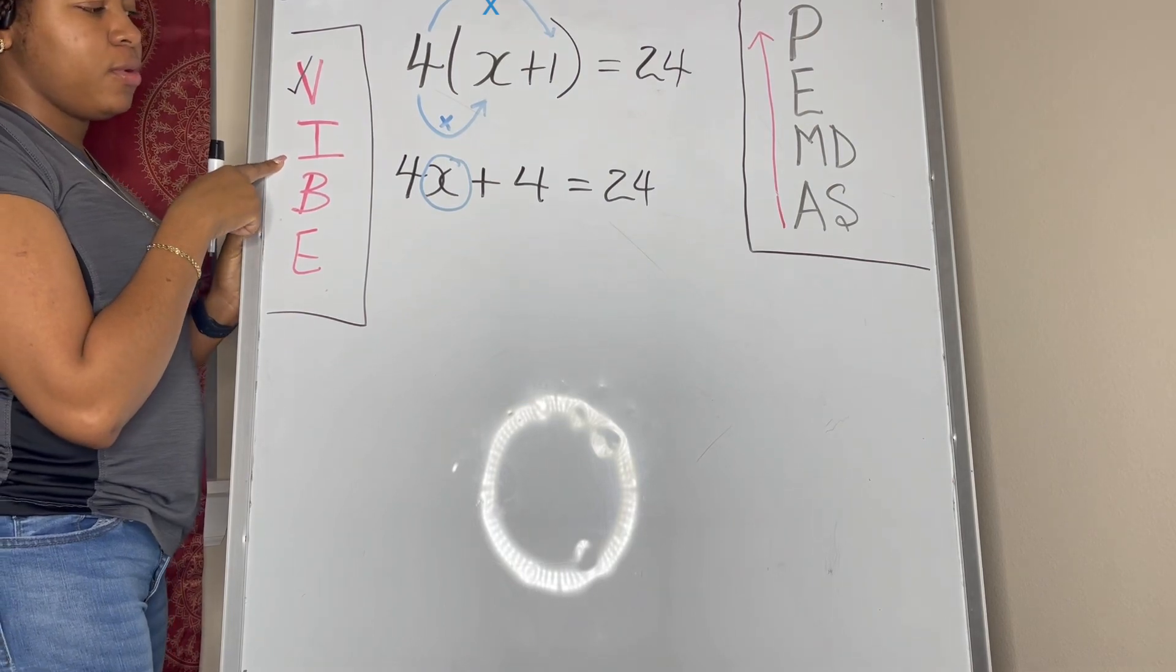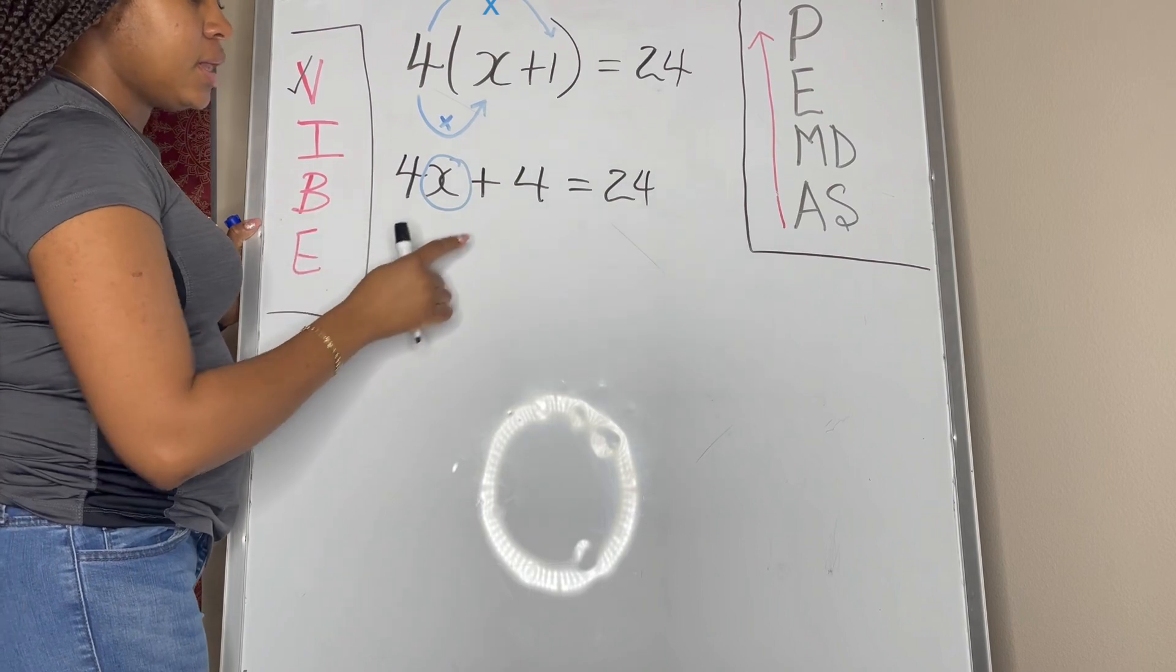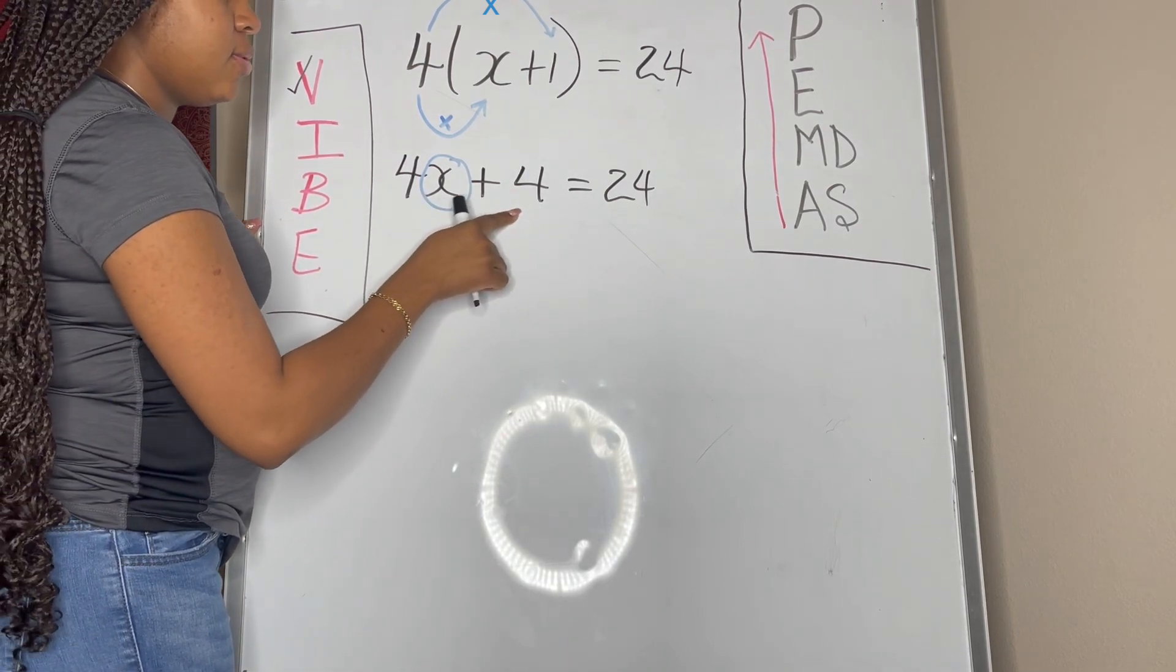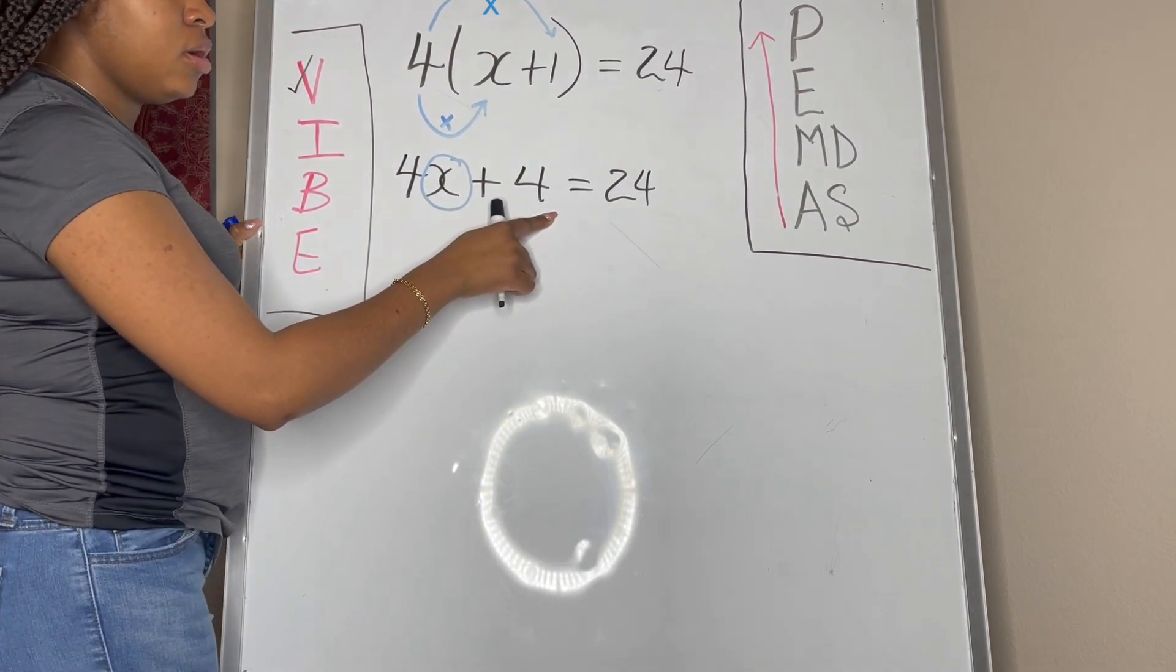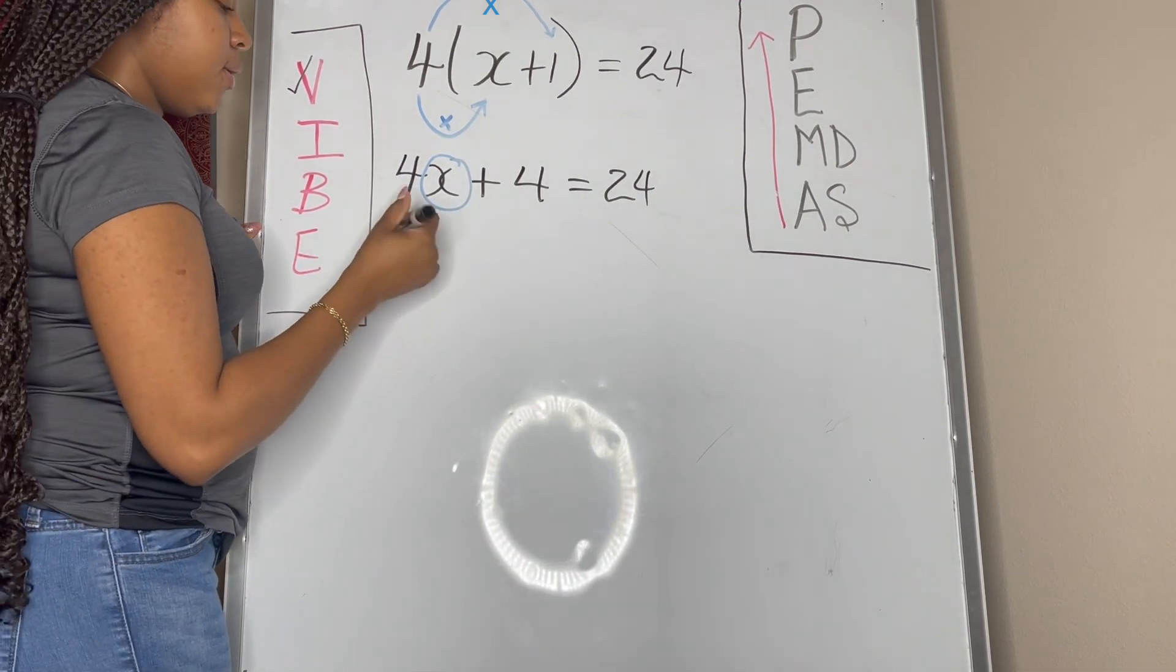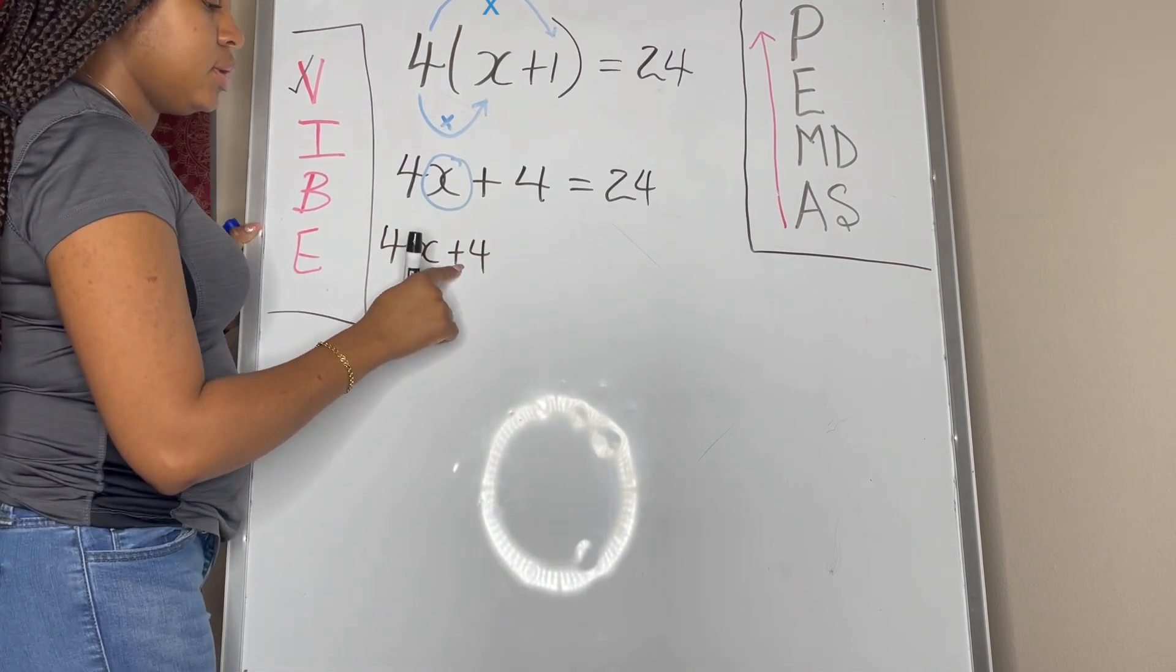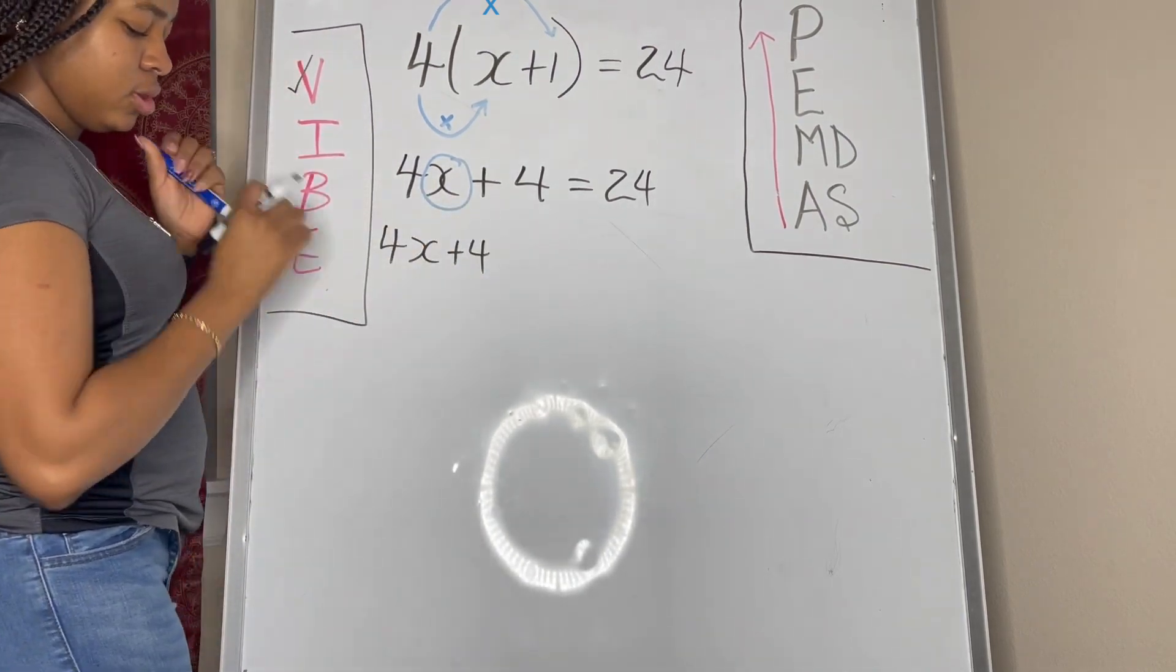So that's our variable. We're not done until our x is by itself. Then we look for I, which is to isolate the variable by performing inverse operation. The inverse operation that we're going to do first is we're going to get rid of the addition of four that's taking place here, so we need to do a subtraction of four.